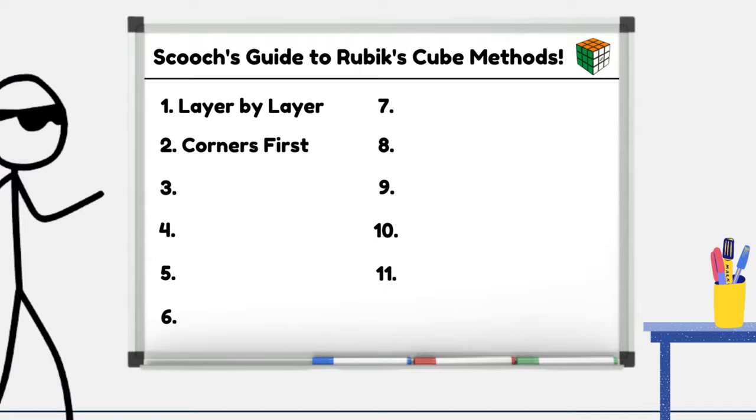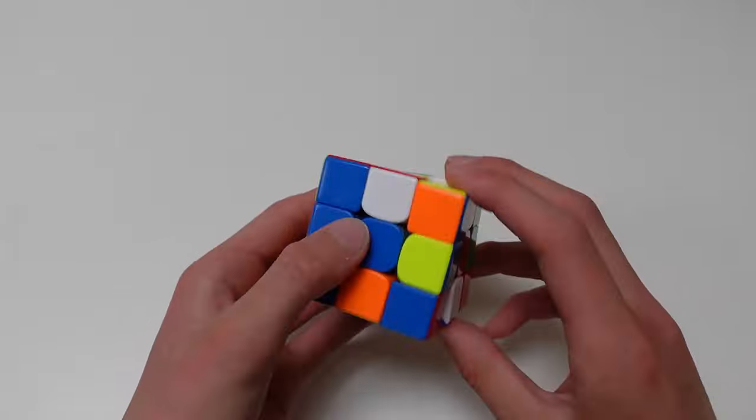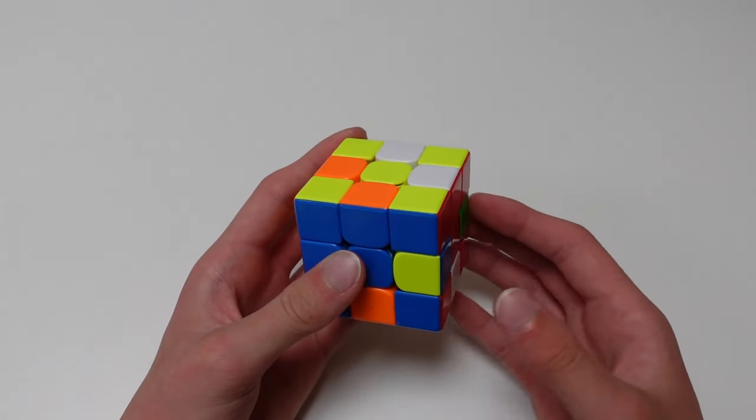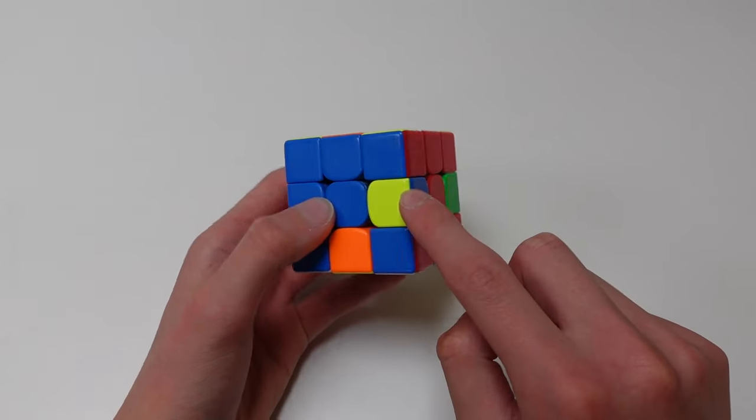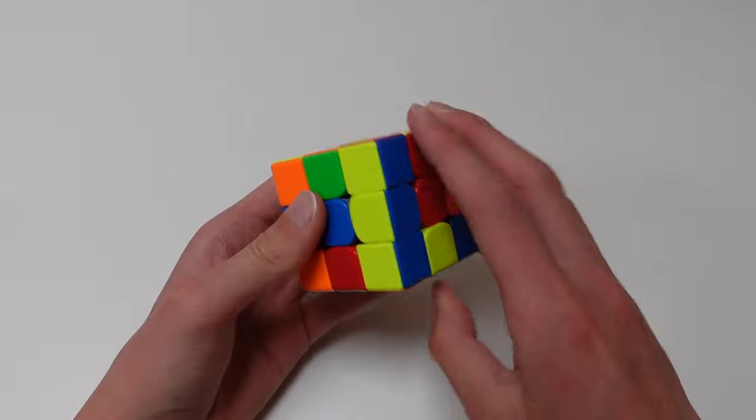Number 2, corners first. In this method, you solve the corners first. This is basically solving a 2x2, but on a 3x3. From here, there are various ways you can solve the edges. The one I've found easiest is to do the top and bottom edges, and then permute and orient the ones in the middle layer.